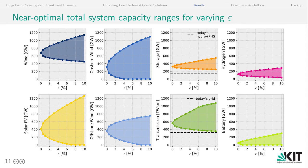This slide shows the key results of our study. All eight subplots are structurally very similar. They show on the x-axis the cost deviation ranging from 0% to 10% in steps of mostly 1%, and on the y-axis the minimum and maximum installed capacities per carrier. We have a subplot each for wind, onshore wind, offshore wind, and solar PV on the left-hand side, and storage and transmission infrastructure on the right-hand side.